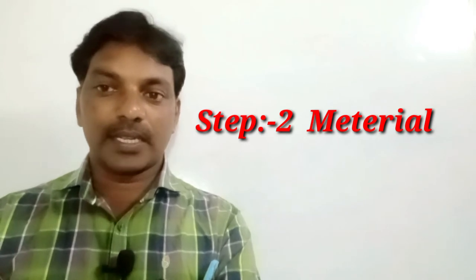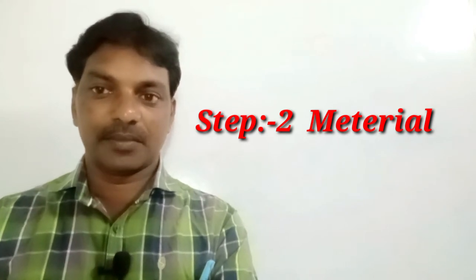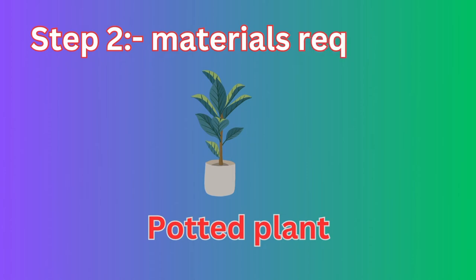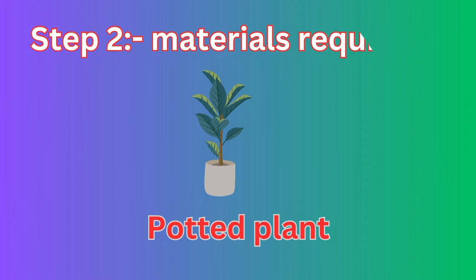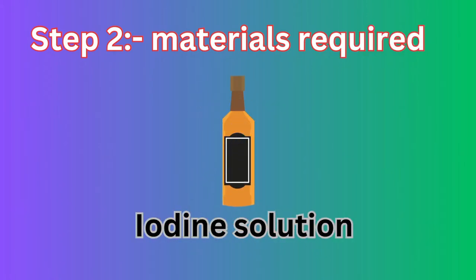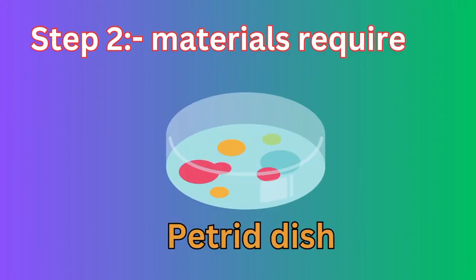The second step is materials. Let me show all the materials one by one with brief information. Materials required: first, a potted plant; second, iodine solution; third, a petri dish — used to wash the leaf after boiling; fourth, a beaker — in which we take water to boil the test tube.